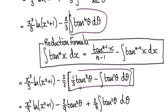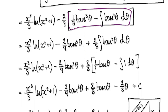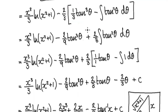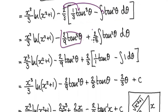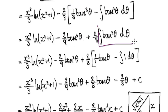Tidy this up: this times this gives you this term, and this times this gives you this term. Now apply the reduction formula again on the tan squared part, carrying the 2 over 3 constant.